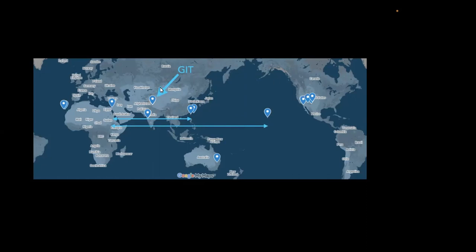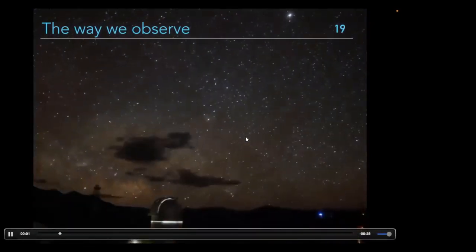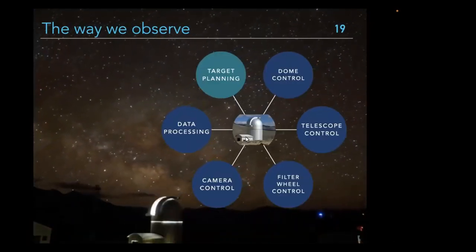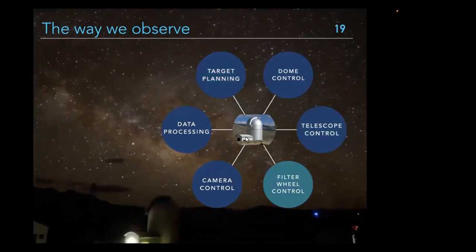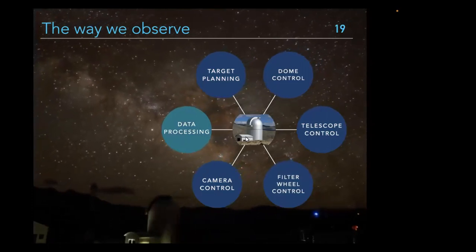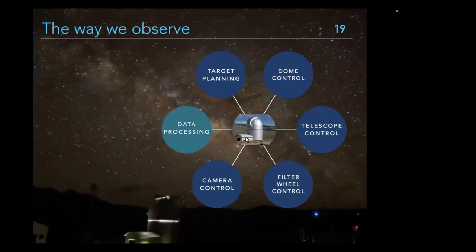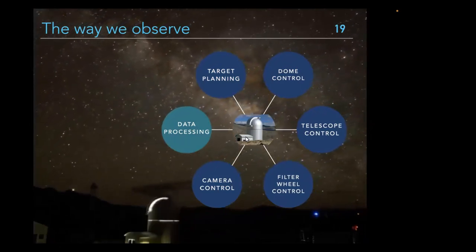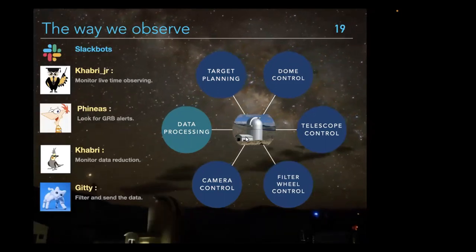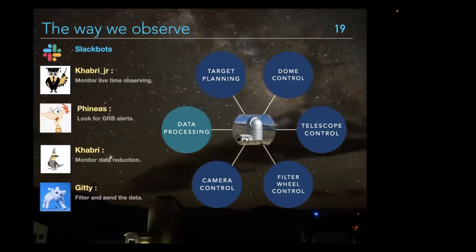GIT is about 12 hours in time difference from ZTF — almost exactly opposite on the globe — giving completely complementary light curve coverage. We operate GIT in a robotic way, controlling the dome, filter wheel, camera, and data pipeline all automatically. This automation gives very good efficiency.